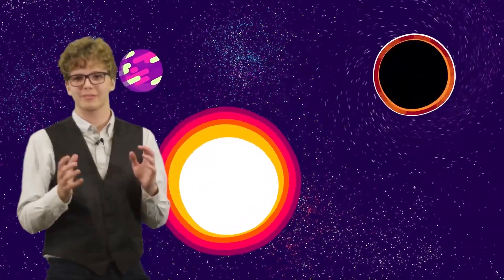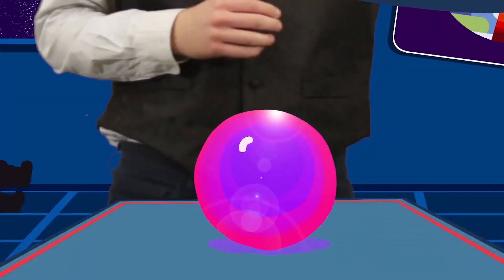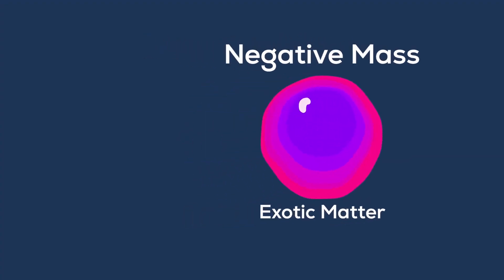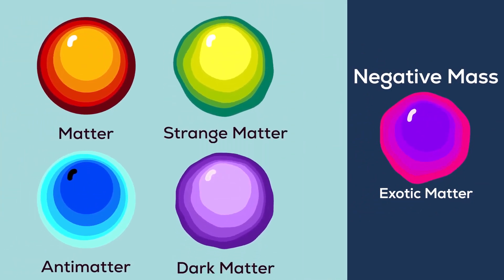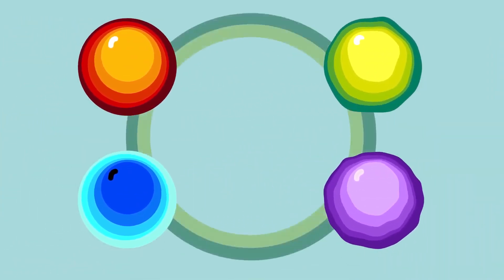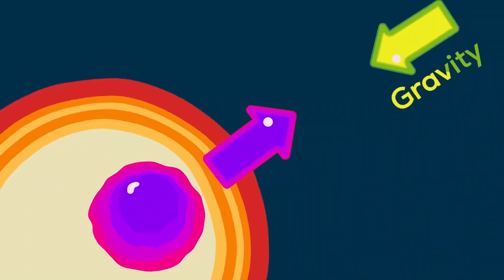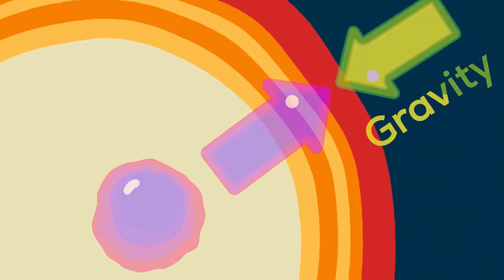Gravitational forces would constantly be trying to collapse the wormhole and create black holes at the ends of it. To combat this, we need a special ingredient: exotic matter. Exotic matter is speculated to have negative mass, making it unique among all other types of matter. While normal matter attracts other matter, exotic matter repels other matter and counteracts gravity, meaning if we were to apply it to our man-made wormholes, it would balance the forces to keep the wormhole stable.